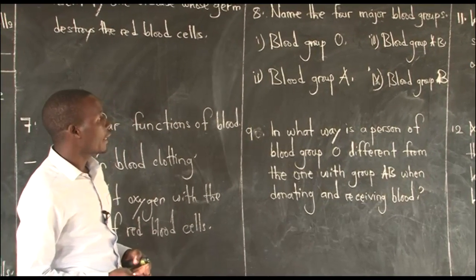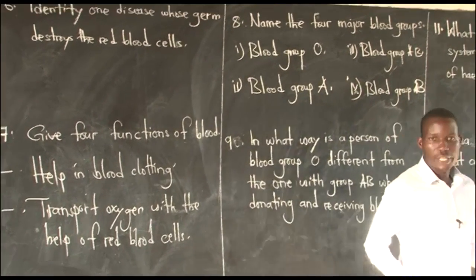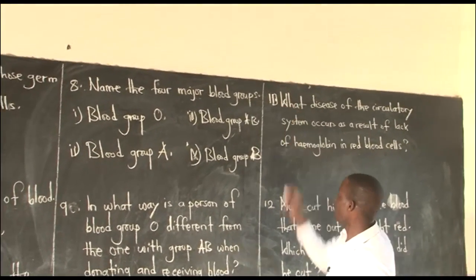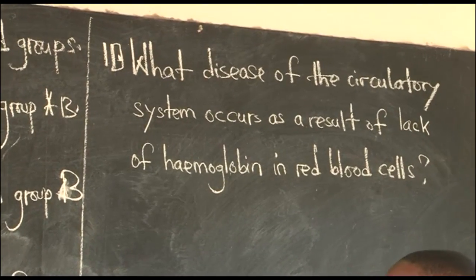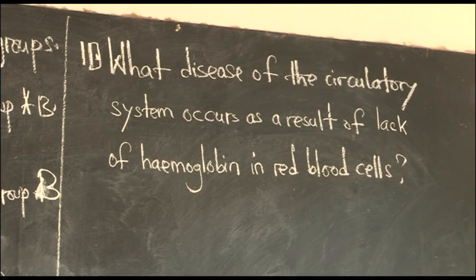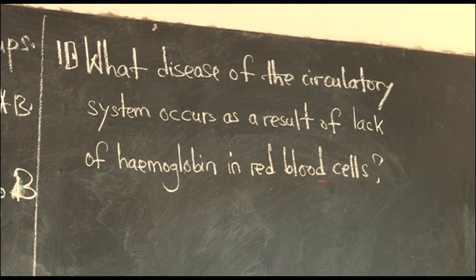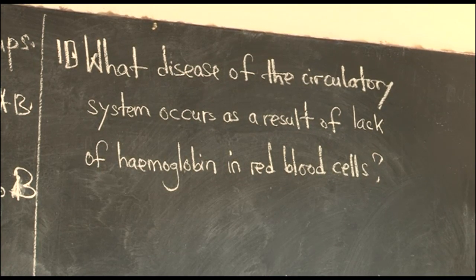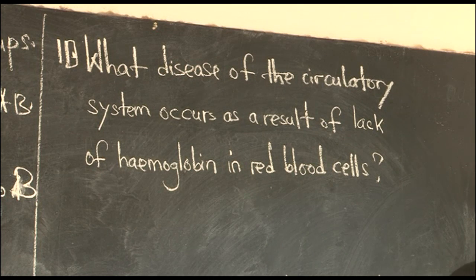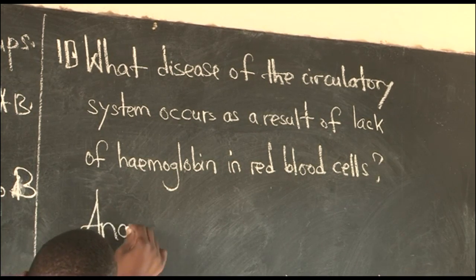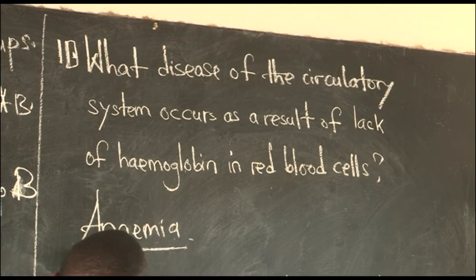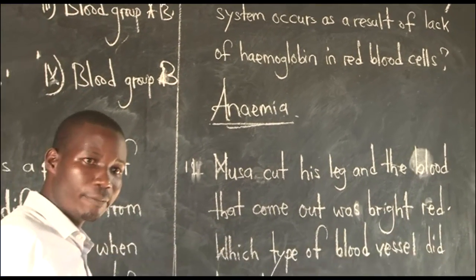We can now move to number ten. For number ten, we are simply asked: what disease of the circulatory system occurs as a result of lack of hemoglobin in the red blood cells? We learned a number of diseases that affect the blood system. Which disease can majorly be a result of lack of hemoglobin — lack of the red color in the blood? We discussed about it and we say this can simply be anemia. Somebody who lacks hemoglobin in the body will easily have anemia. Anemia is majorly caused when there is a lack of enough iron or enough blood in the body.